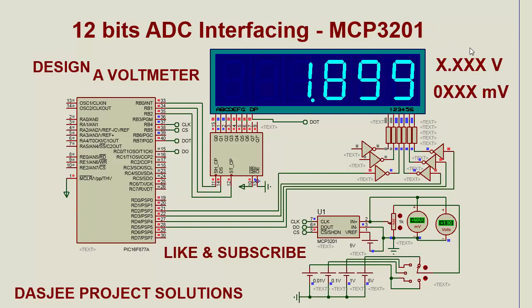This is the format in which we will show volts, and this is the format in which millivolts will show on the seven-segment display. This is a 74HC595 to drive the seven-segment display, this is a PIC16F877A, and this is the MCP3201 12-bit ADC. This ADC works on SPI communication.